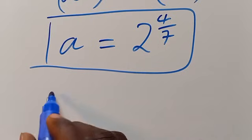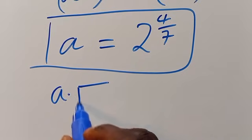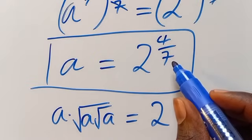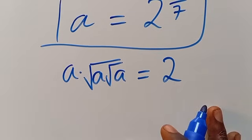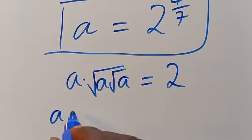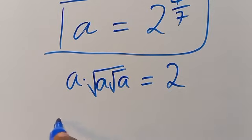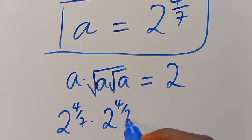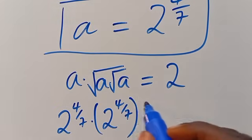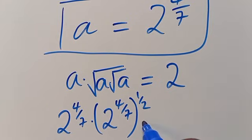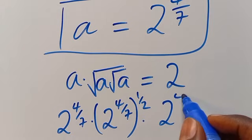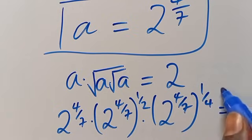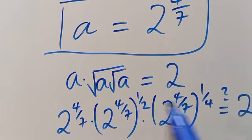To verify, we have A multiplied by root of A into root of A, which equals 2. Substituting A equals 2 to the power of 4 divided by 7: we get 2 to the power of 4 divided by 7, multiplied by 2 to the power of 4 divided by 7 to the power of 1 divided by 2, then multiplied by 2 to the power of 4 divided by 7 to the power of 1 divided by 4 — because of the half of a half — and we ask: is it going to give us 2?